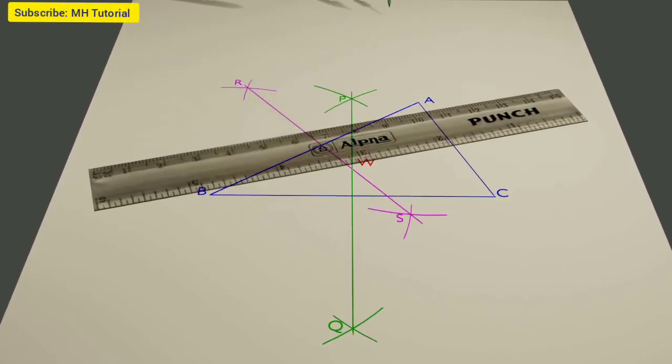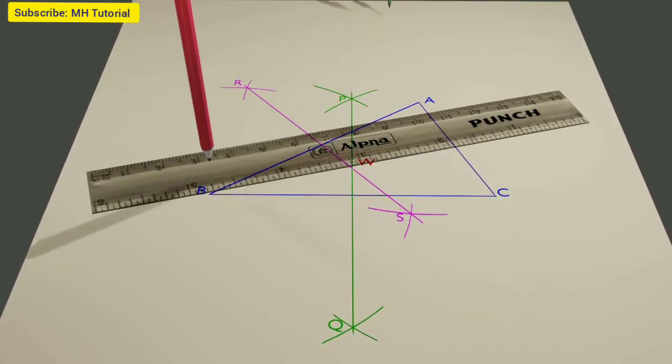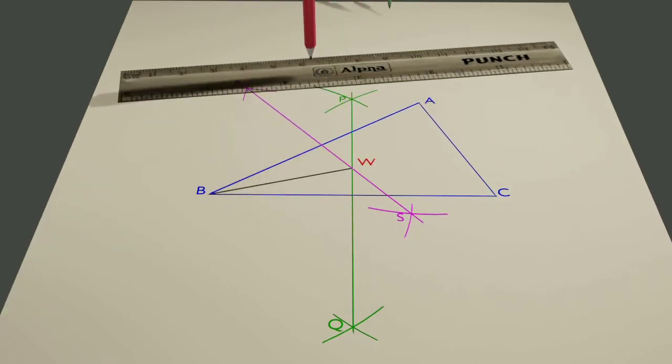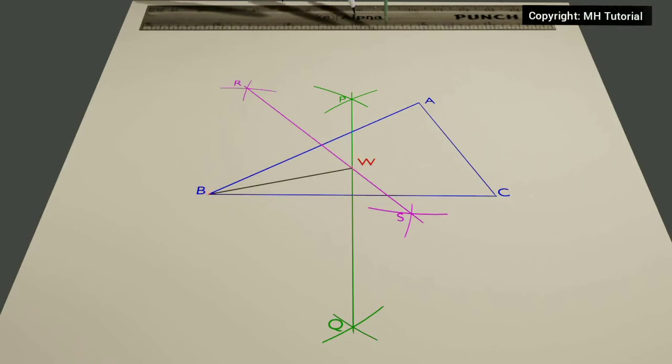B is connected to W. WB is the circumradius. In this case, instead of connecting W to B, we could also join W to C or W to A.